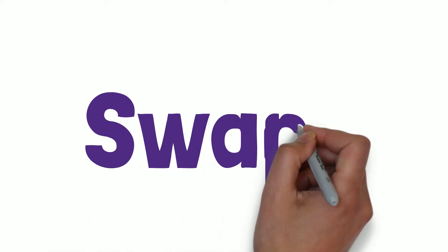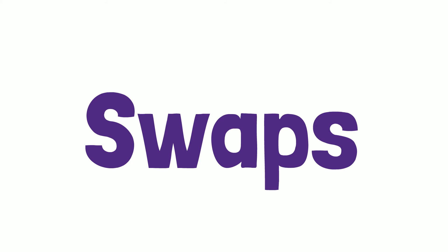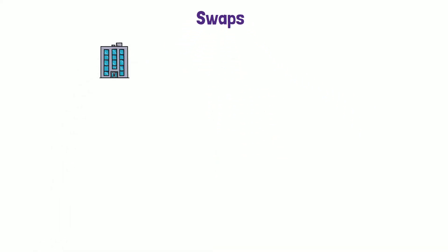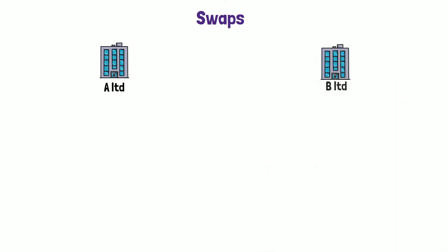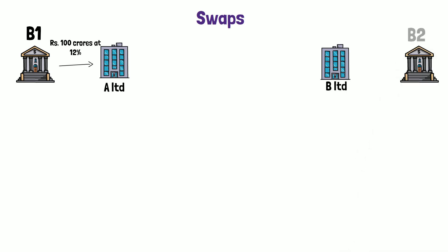The last type of derivative we are going to discuss is swaps. Let us take an example to understand how a swap arrangement works. Company A Limited and B Limited each have a fund requirement of 100 crore rupees. A's banker B1 has sanctioned a 100 crore rupee loan at a fixed rate of 12%, whereas B Limited's banker B2 has sanctioned it at MIBOR plus 2%. MIBOR — the Mumbai Interbank Offered Rate — is the rate of interest charged by a bank on a short-term loan to another bank, calculated on a daily basis, making it variable in nature.